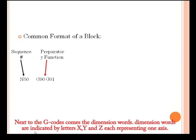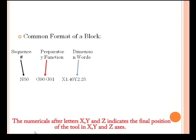Next to the G-codes come the dimension words. Dimension words are indicated by letters X, Y, and Z, each representing one axis. The numericals after letters X, Y, and Z indicate the final position of the tool in X, Y, and Z axes.